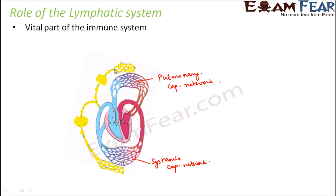The flow of oxygenated blood from the heart takes place at a very high pressure — this is the oxygenated blood, the red one. It flows under very high pressure, and that is what is measured as the systolic pressure, around 120 mm of mercury.